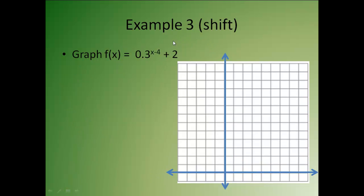Example 3. This one's going to include some shifting. I have a minus 4 here that's attached to the x. So that's going to move my whole graph right 4 units. And then the plus 2 is going to move everything up 2 units. But I'm still going to graph it the same general way. So I'm going to graph negative 2, negative 1, 0, 1, 2, 3, and 4.